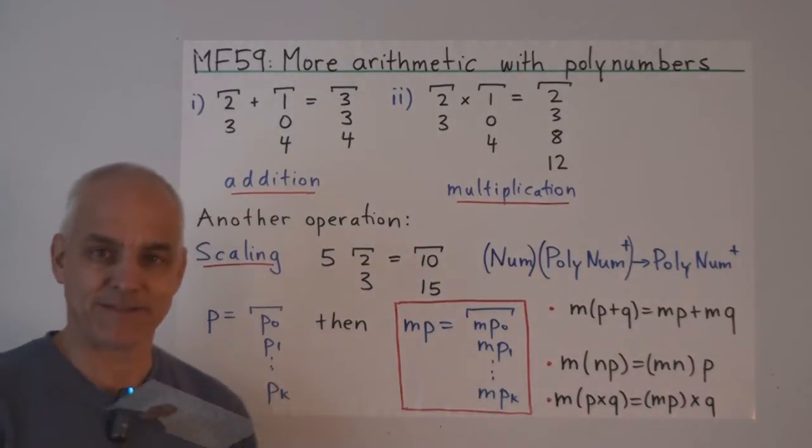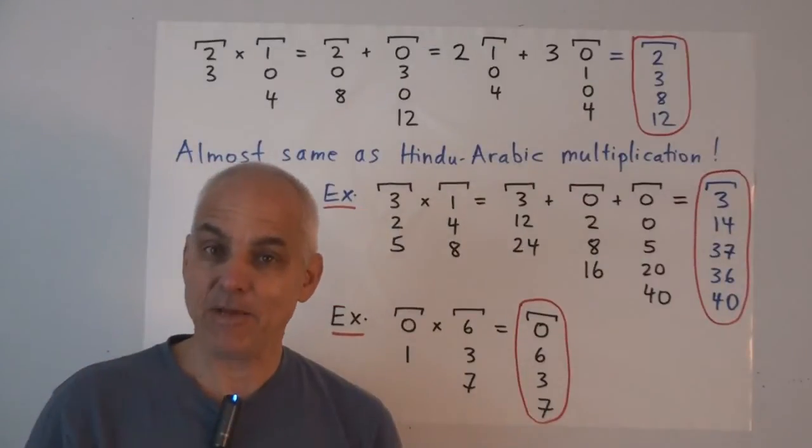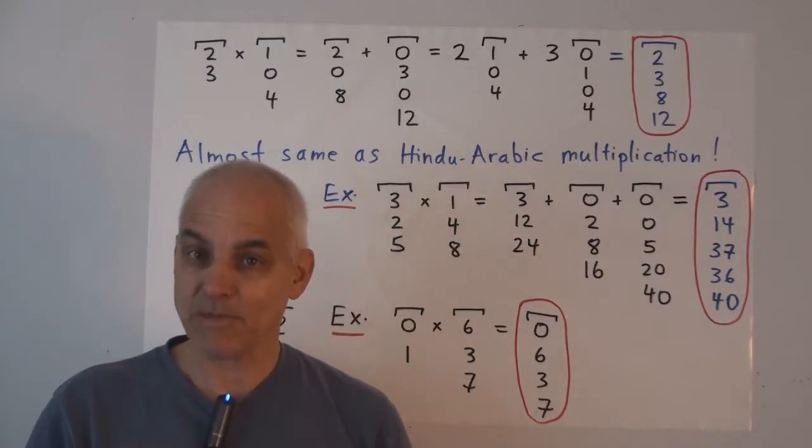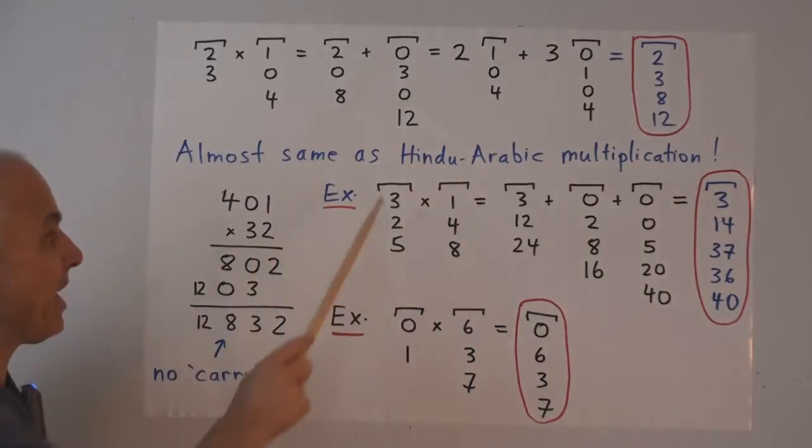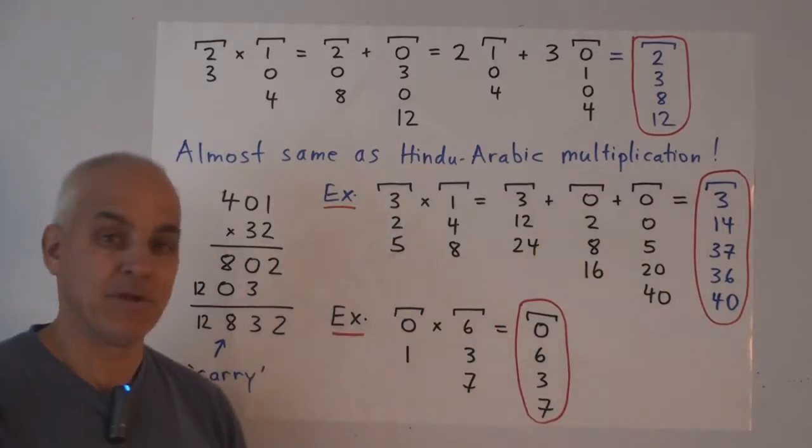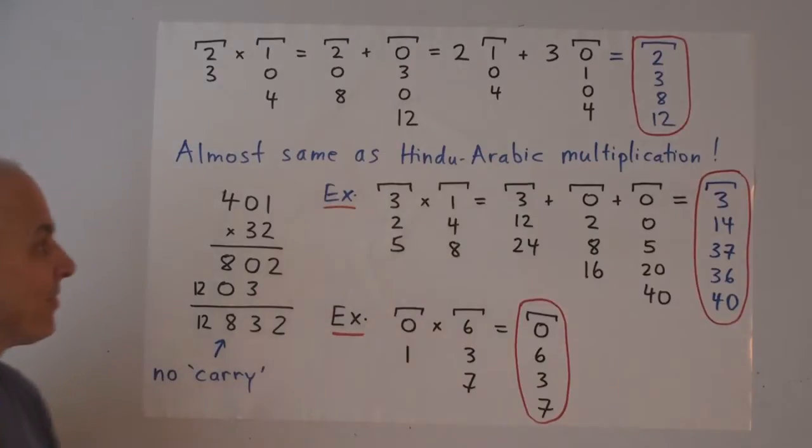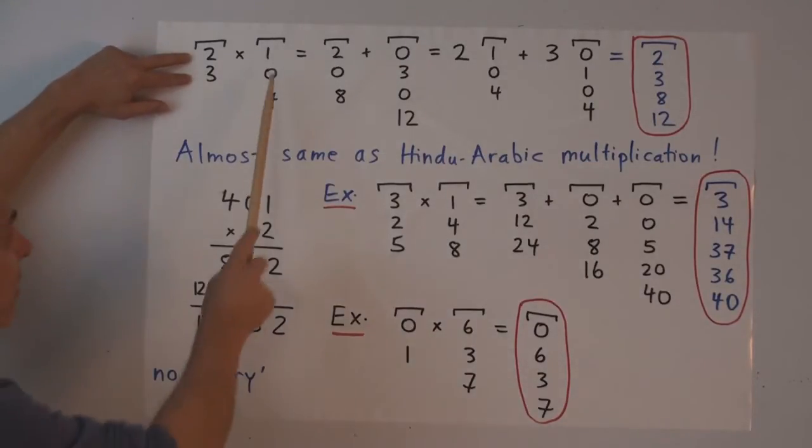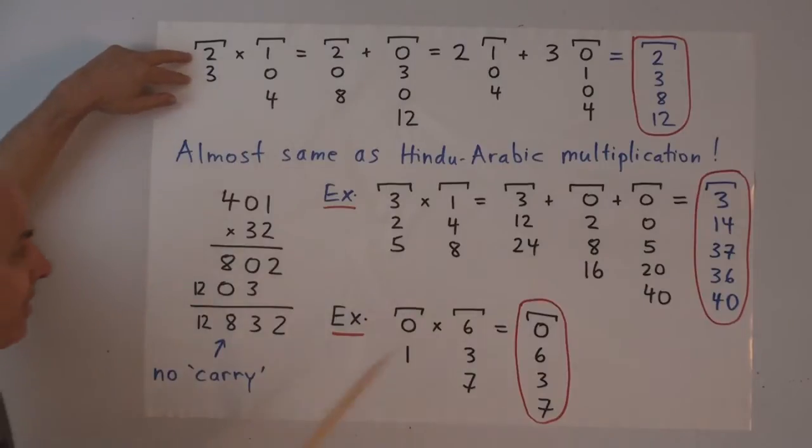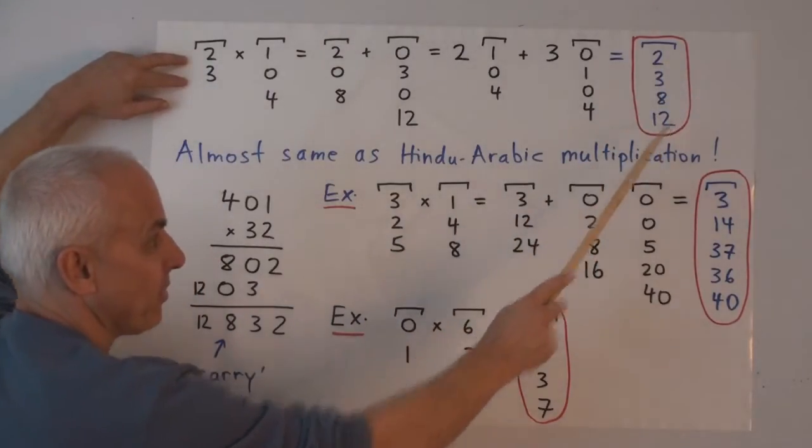This idea of scaling polynumbers gives us an alternate way of thinking about multiplying two polynumbers, which makes it very parallel to Hindu-Arabic multiplication. For example, if you're multiplying 2, 3 by 1, 0, 4, the result, which is over here, 2, 3, 8, 12,